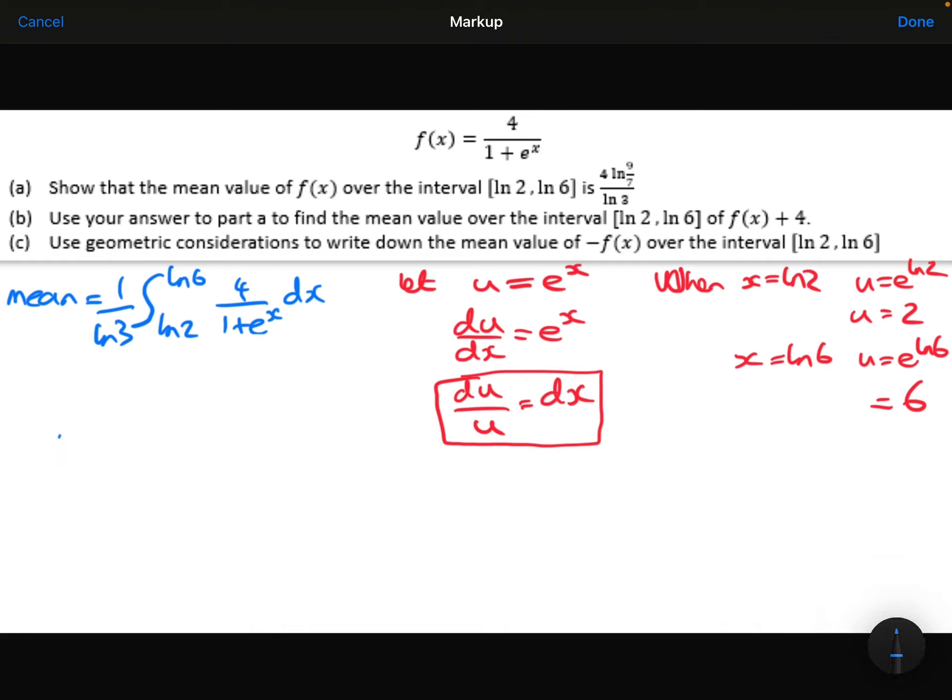Right. Let's come to the integration then. So we've got 1 over ln 3 of the integral from 2 to 6 of 4 over 1 plus the e to the x is now a u. And then our dx is du over u.